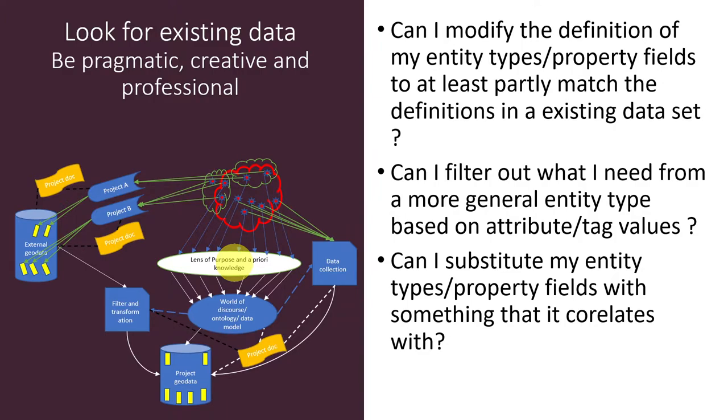Then there can be situations where you can go part of the way by taking a general dataset. So let's say you are interested in high-rise buildings. You don't have any dataset of high-rise buildings, but you have a dataset of buildings and addresses. Then you can combine these together to see how many floors there are in the building, and from that you can calculate if it's a high-rise building or not.